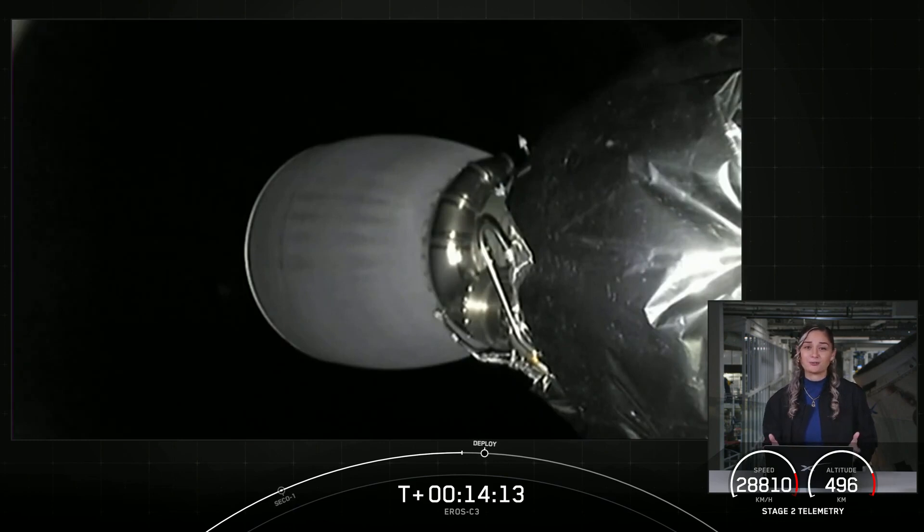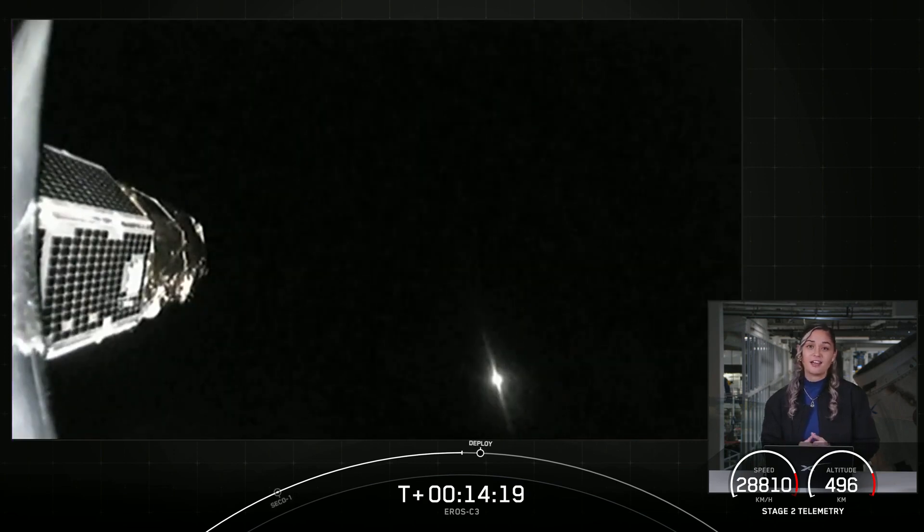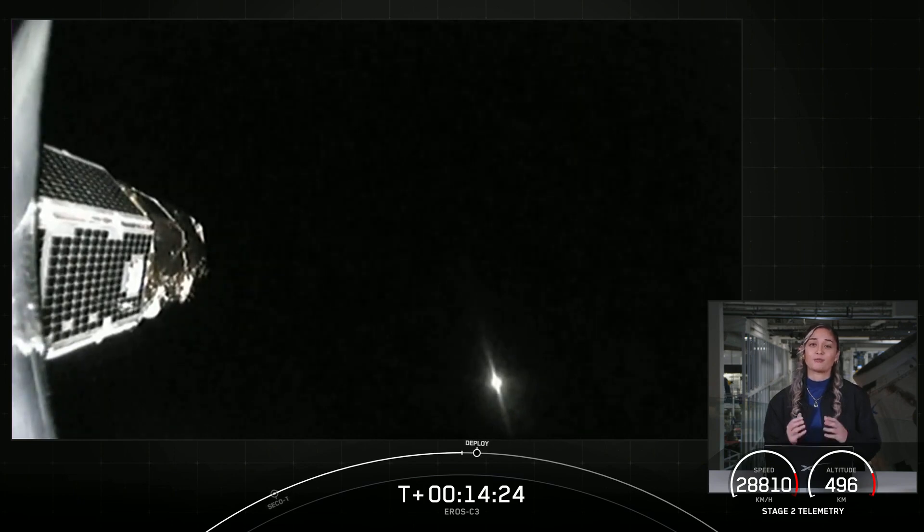So far, we've seen a handful of successful milestones, including stage separation, startup and shutdown of our second stage engine, as well as the 160th landing of our Oracle-class rocket, including both Falcon 9 and Falcon Heavy landings.